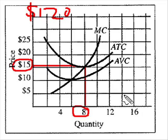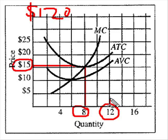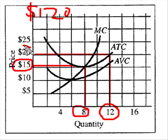And now finally, let's ask what is the firm's approximate average total cost of production when it produces, let's say, 12 units. Identify the 12, go up the function until you bump into average total cost, and then go over horizontally, and we discover that that is $20, the average total cost of producing 12 units.